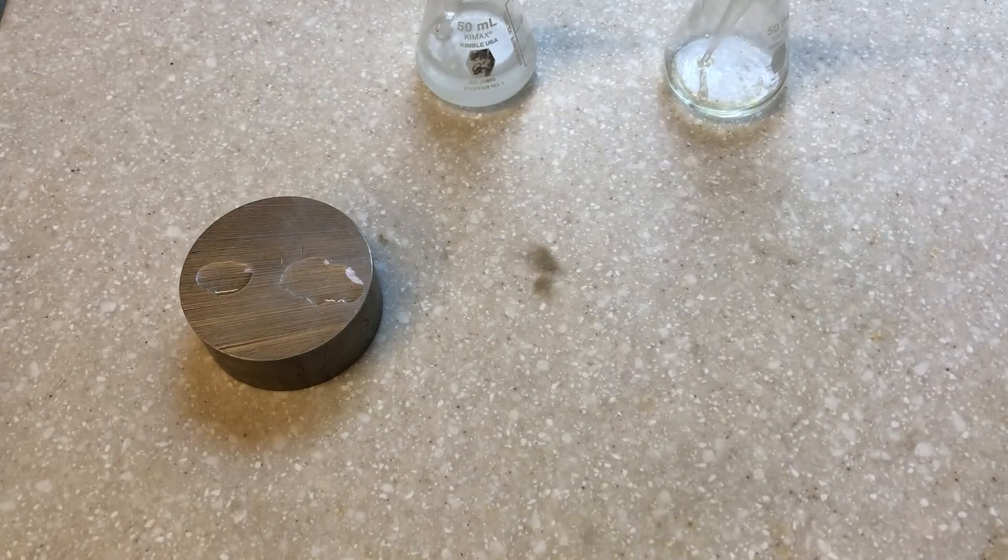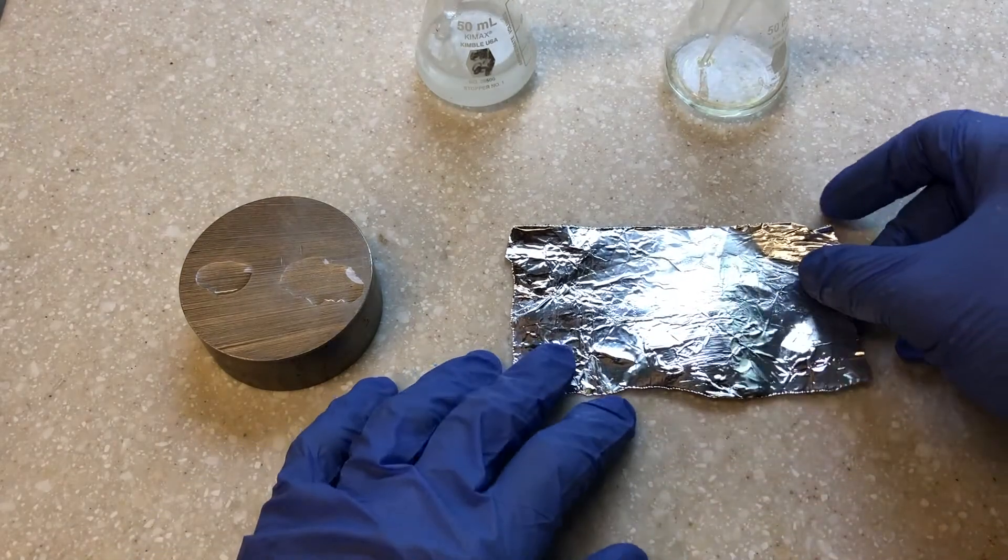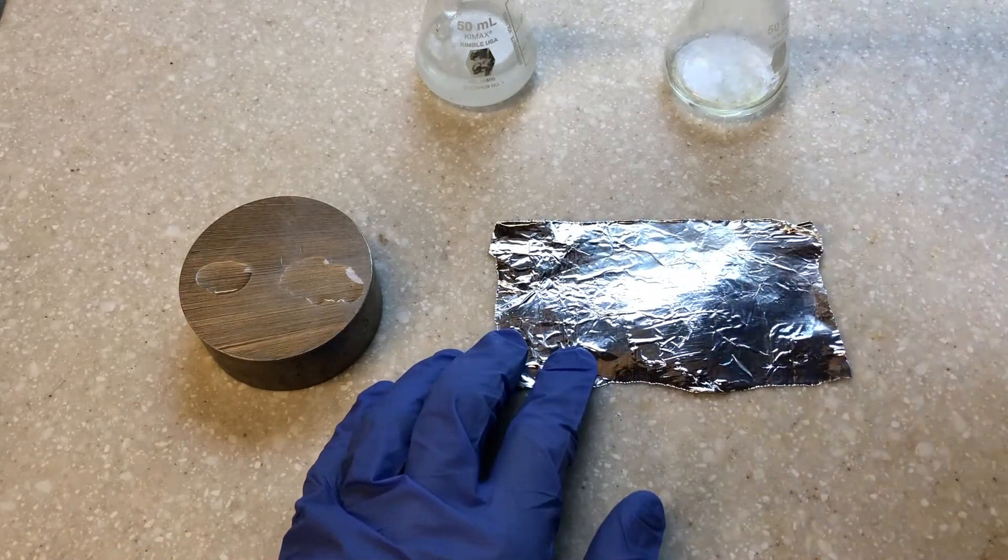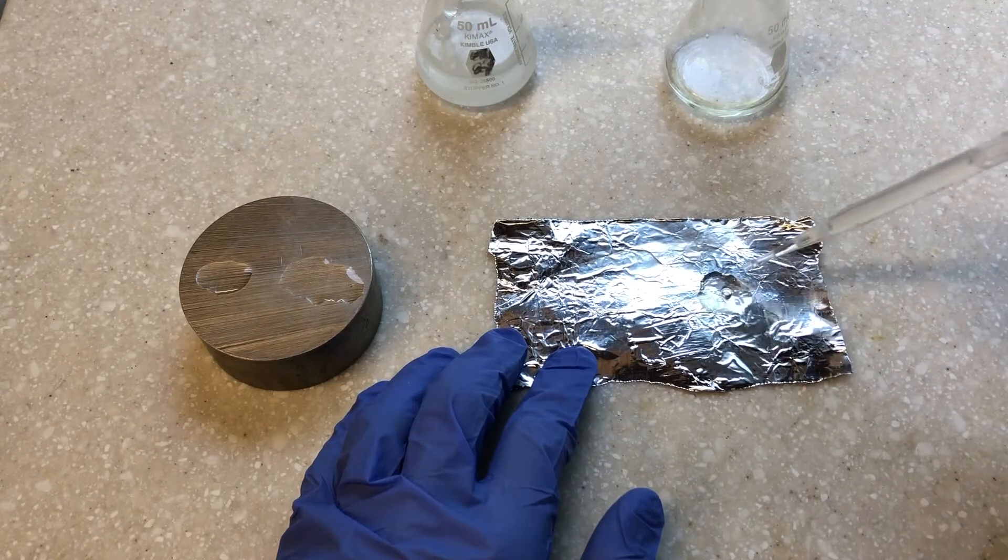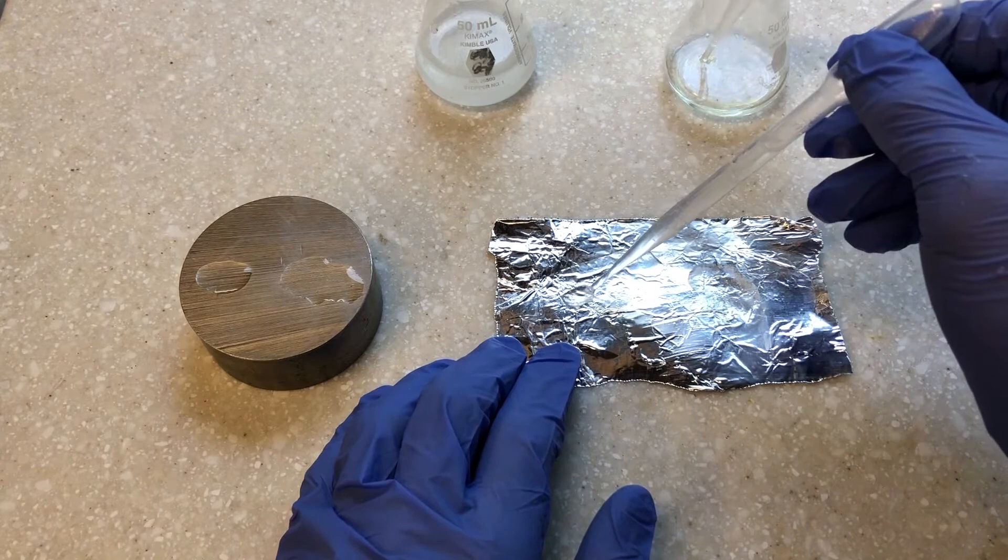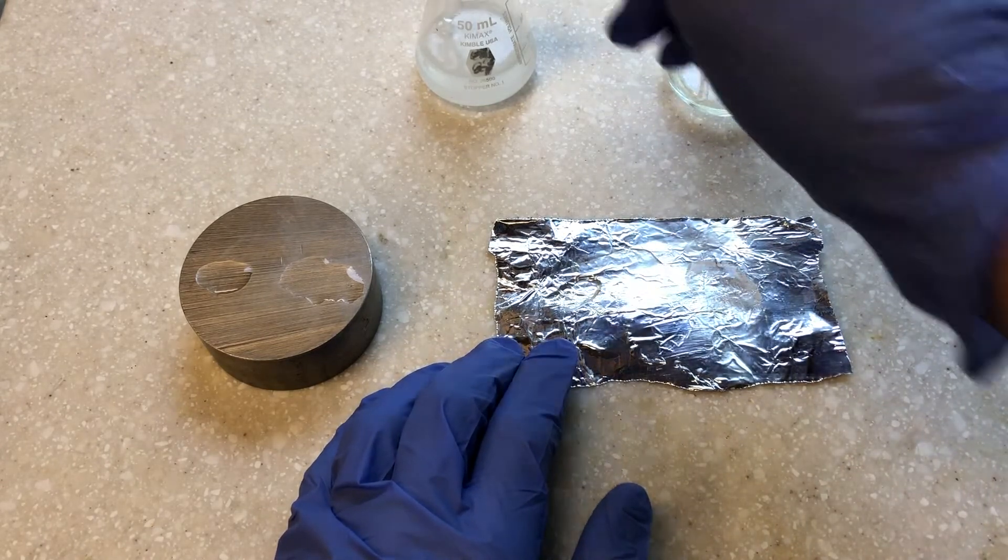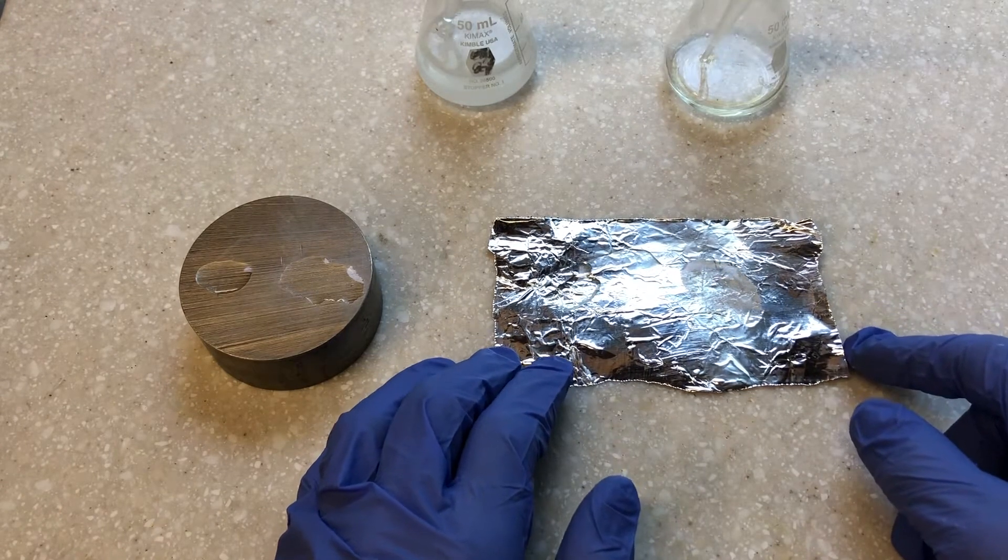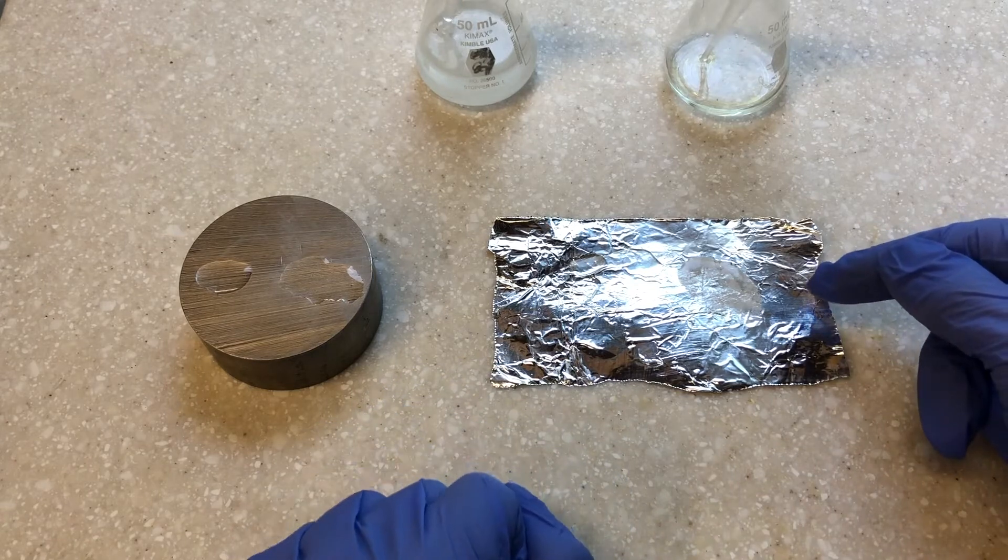Let's get a piece of aluminum and see how it differs. It's already being attacked by the muriatic acid.